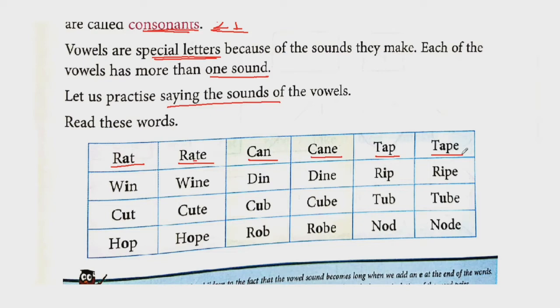Now second row. Win. Which vowel is used here? I. In this word we have used vowel I. So win, wine W-I-N-E, din D-I-N, dine D-I-N-E, rip R-I-P, and ripe R-I-P-E. Each one's sound is different.